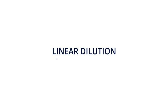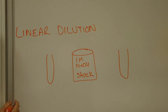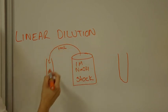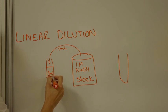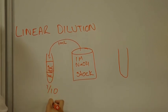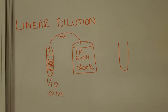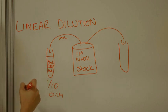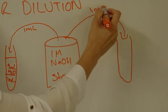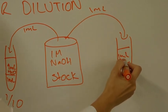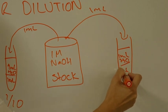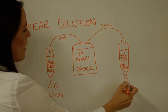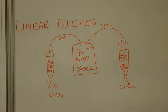Linear dilution works differently. Starting from the same one molar sodium hydroxide stock, we make each dilution independently from the stock. The first dilution: nine mils of water plus one mil of stock gives a one-in-ten, which is 0.1 molar. For a second dilution, we go back to the stock — say one mil of water and one mil of stock for a one-in-two dilution — giving a 0.5 molar solution.